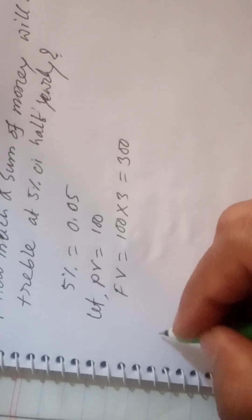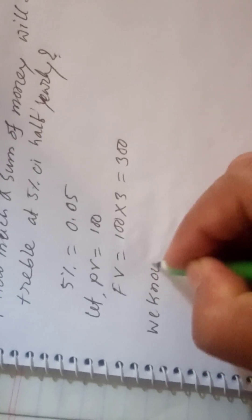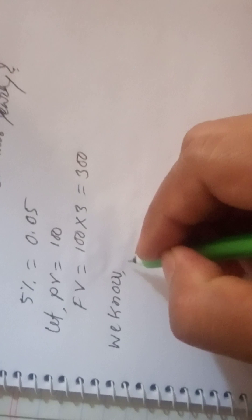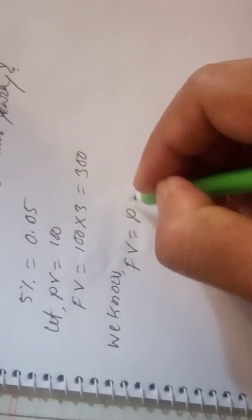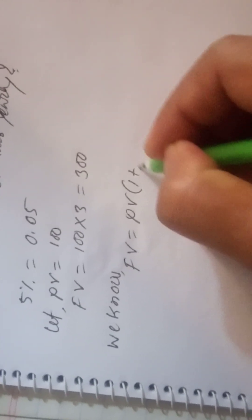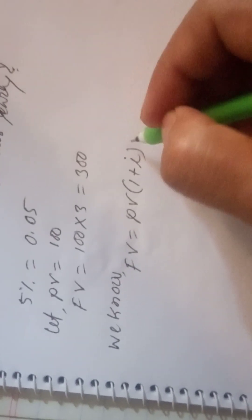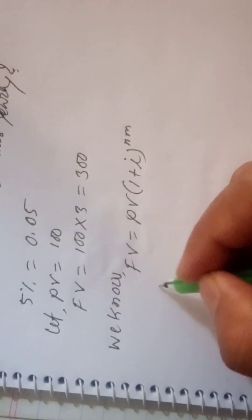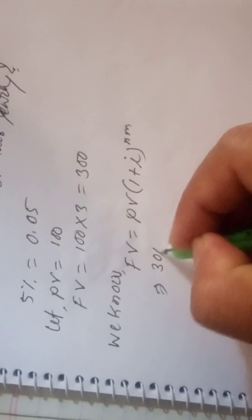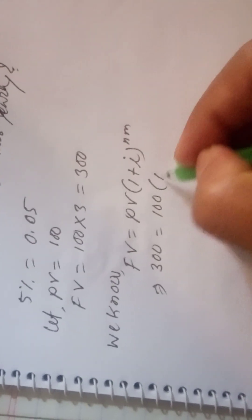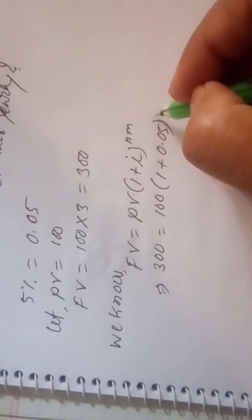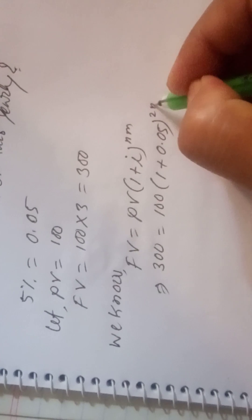We know FV equals PV times (1 plus i) to the power m. Because of half-yearly, here FV is 300 and PV is 100, 1 plus i where rate of interest is 0.05, then m half-yearly is 2n.